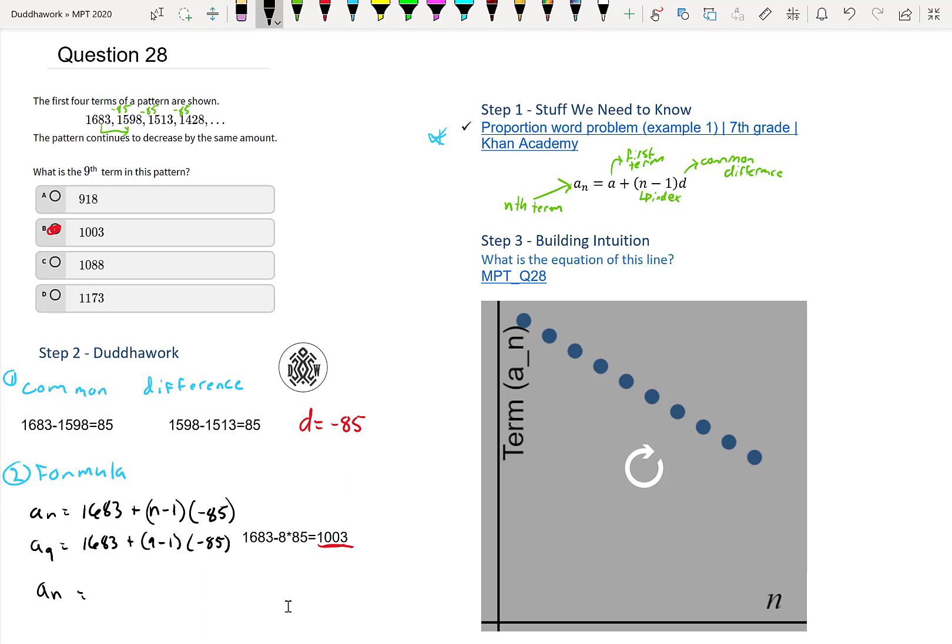So A_N is just, if we simplify this part, we would multiply each term. So essentially, it's negative 85 N. So I'll write it like this, negative 85 N. And then it's plus 1683 plus 85. So I'll do that in the calculator. So 1683 plus 85, that's 1768. So that's plus 1768. What kind of equation does this look like graphically? Is it a quadratic? Is it a line? What is it?